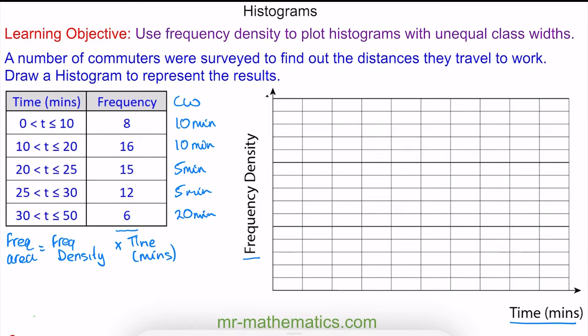Now we need to work out the height of our bars, which is the frequency density, and we can work this out by rearranging this formula. The frequency density is equal to the frequency divided by the time, and the time is the class width.